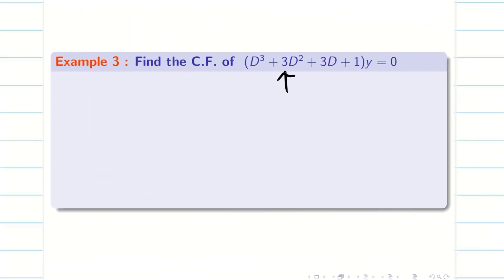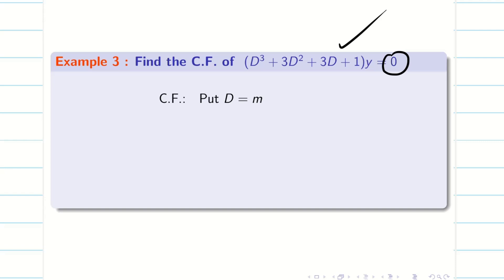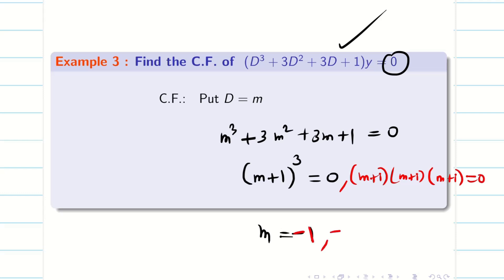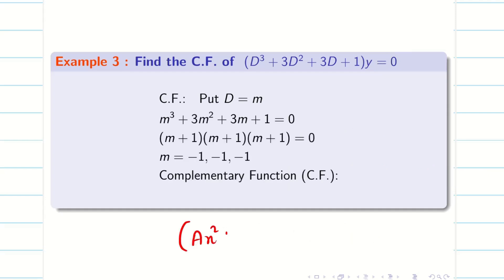When you see a cubic equation, don't panic. The equation is already homogeneous since the right-hand side is 0. Putting D = m gives the auxiliary equation m³ + 3m² + 3m + 1 = 0, which is (m + 1)³ = 0. This means (m+1)(m+1)(m+1) = 0, giving three equal roots: m = −1, −1, −1. For three equal roots, the CF is (ax² + bx + c)·e^(−x).